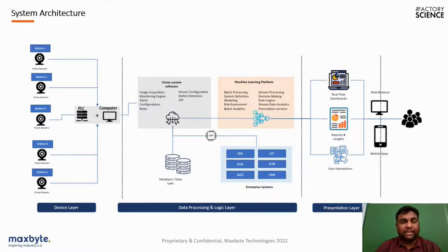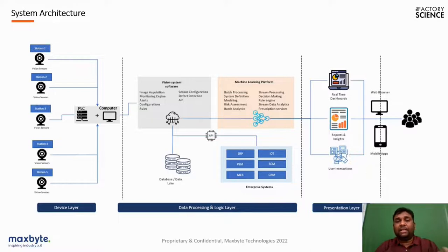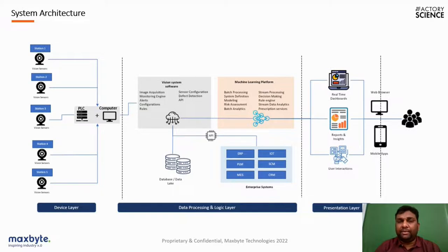This is a typical system architecture where the first layer is the device layer — stations or machines connected with PLCs and vision software. Inside the vision software, there is a huge database and critical algorithms running, including image acquisition monitoring engines and configuration rules. On the machine learning platform, algorithms handle batch processing, stream processing, vision inference, image capturing, and image processing. The system can be integrated with ERP, PLM, or MES systems via APIs. Users can view real-time quality data through dashboards on any device — mobile, laptop, or tablet — from anywhere.